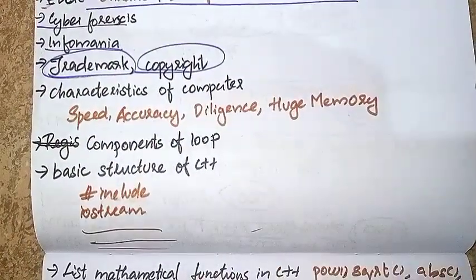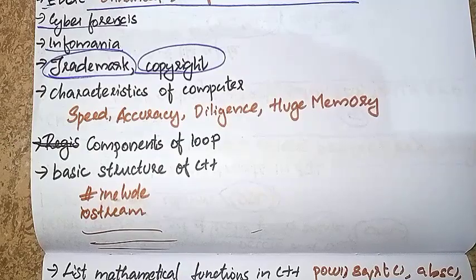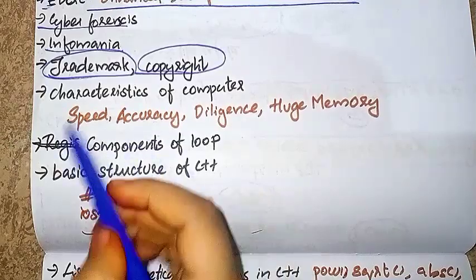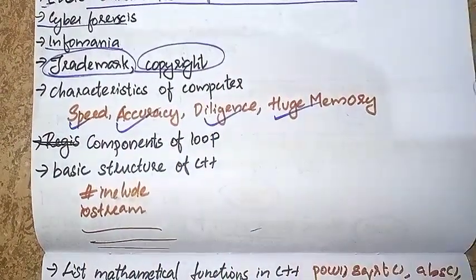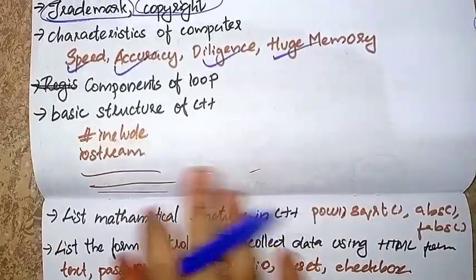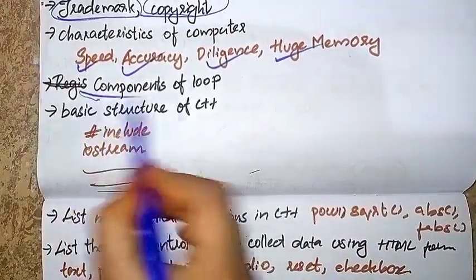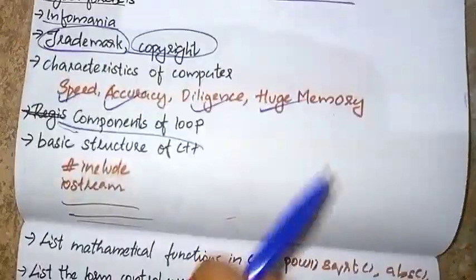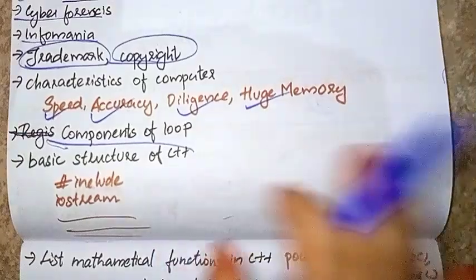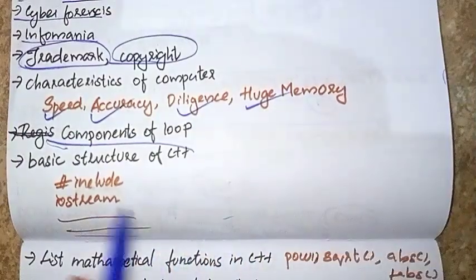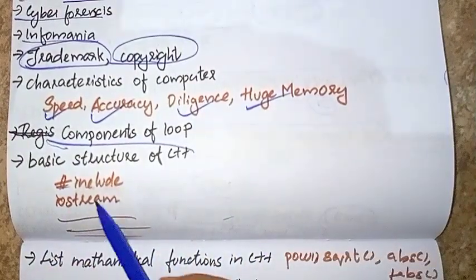Characteristics of Computer: Speed, Accuracy, Diligence, Huge Memory. Components of a Loop: Initialization Expression, Test Expression, Update Expression, Body of Loop.